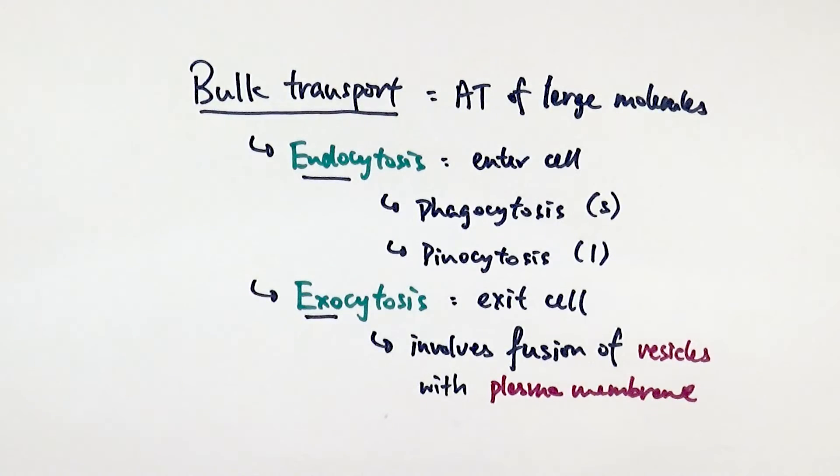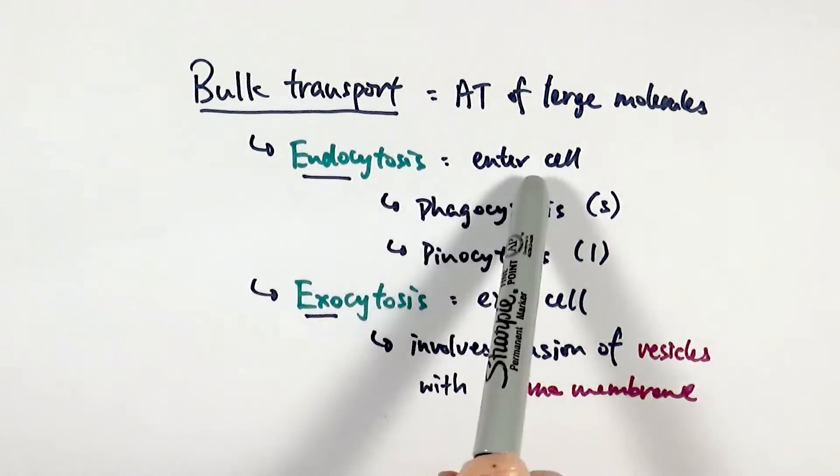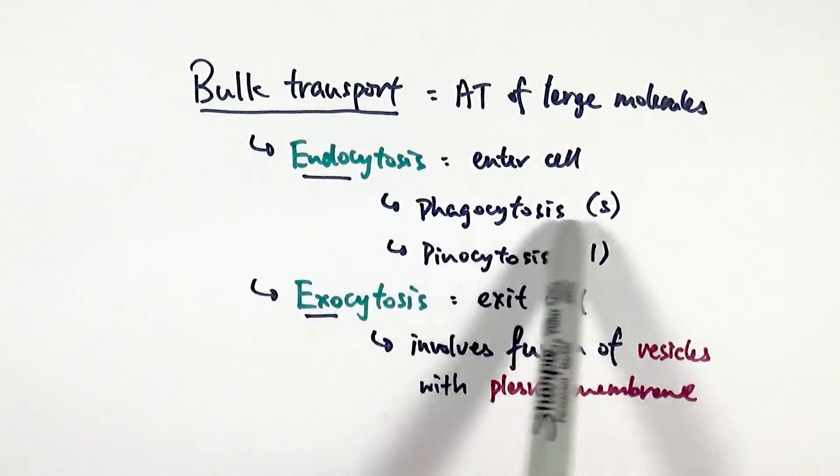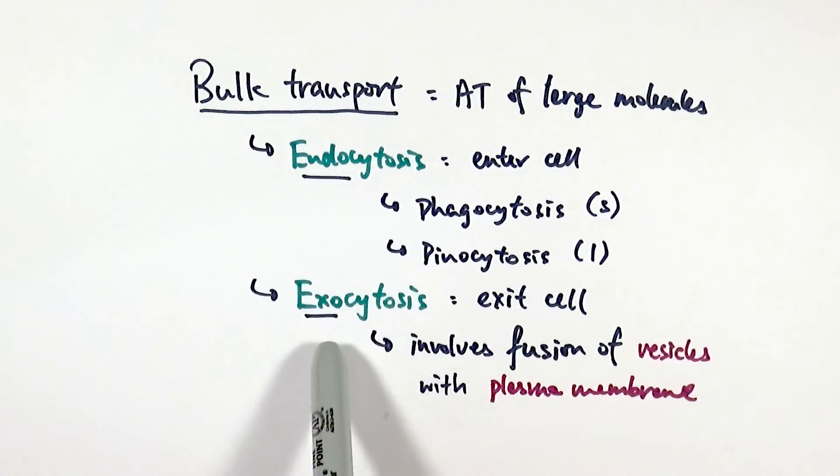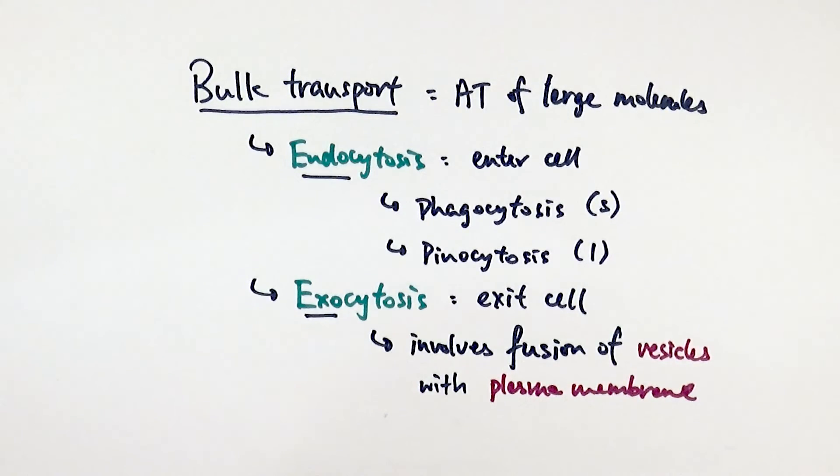Then we've got bulk transport which is basically active transport but of larger molecules. We have two types. We've got endocytosis where things are coming into the cell. Classic one you must know would be phagocytosis because of its major links to the immune system. Exocytosis will be things exiting the cell. Classic example would be how to release enzymes, extracellular enzymes, out of the cell through vesicles fusing with the plasma membrane. And that is active transport.